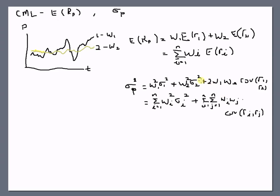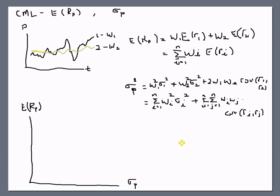Let's move to the derivation of the CML. As mentioned, CML seeks to find the relationship between the expected return of the portfolio and the standard deviation of the portfolio. Let's start with a scenario: assuming we are given $1 million to invest in any assets in the world. There are hundreds of thousands of stocks, and we are supposed to invest the full $1 million in any manner and weight that we want.